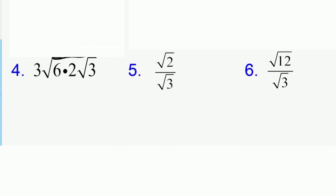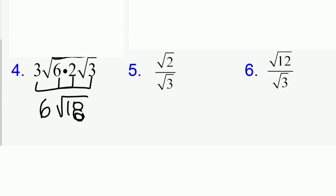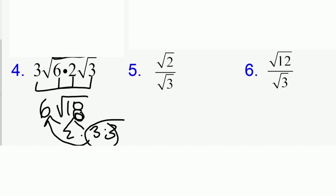The next one is for multiplying and dividing. Multiplying is easy — you just do outside times outside, so the coefficients get multiplied, giving us 6. Then inside times inside multiplies, so we get 6 square root of 18. The square root of 18 can be broken down to 2 times 9, which is 3 times 3. We have a pair that comes out and multiplies with the coefficient 6, giving us 18 root 2 as our final answer.